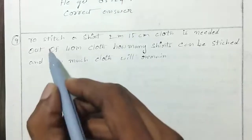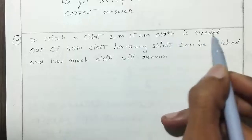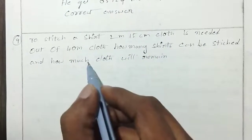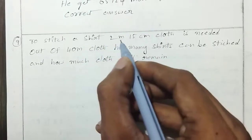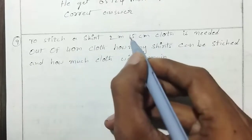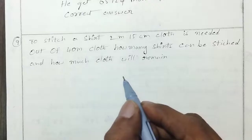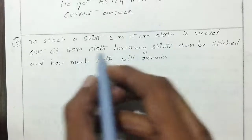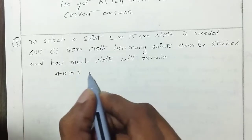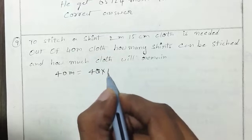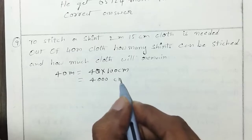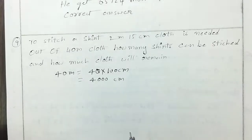Next problem: To stitch a shirt, 2 meters 15 centimeters of cloth is needed. Out of 40 meters of cloth, how many shirts can be stitched and how much cloth will remain? We convert: 40 meters equals 4,000 centimeters. Number of shirts that can be stitched with 4,000 cm of cloth?